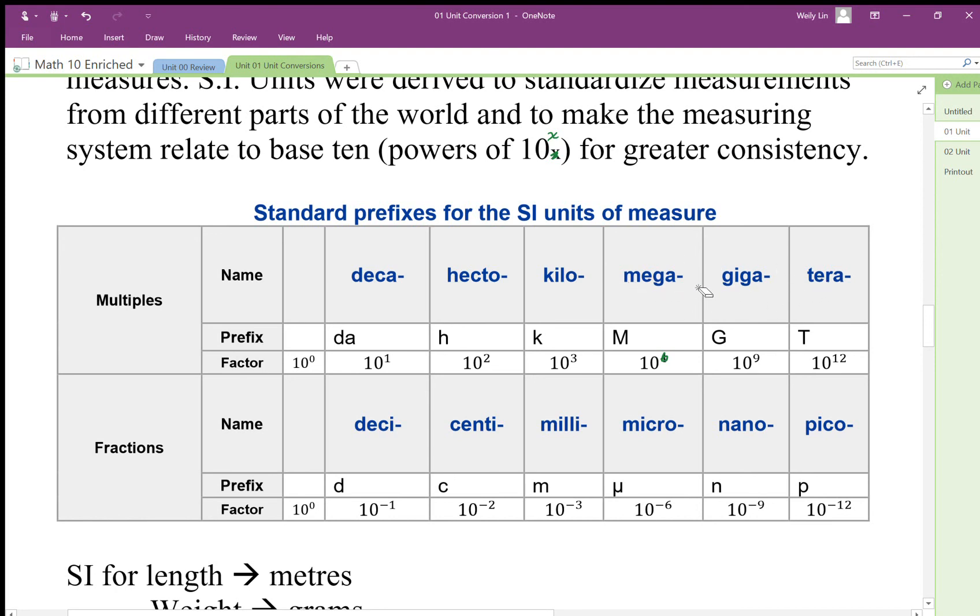When we get into fractions, one tenth is going to be deci. One hundredth is centi, for example centimeter is one hundredth of a meter. Millimeter is one thousandth.